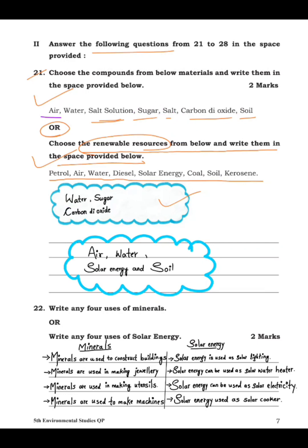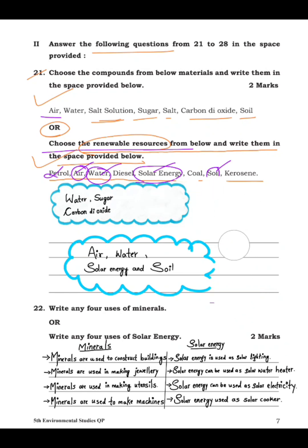For the renewable resources question: petrol is non-renewable, air is renewable, water is renewable, diesel is non-renewable, solar energy is renewable, coal is non-renewable, soil is renewable, kerosene is non-renewable. So air, water, solar energy, and soil are the renewable resources. That is how you have to write it.